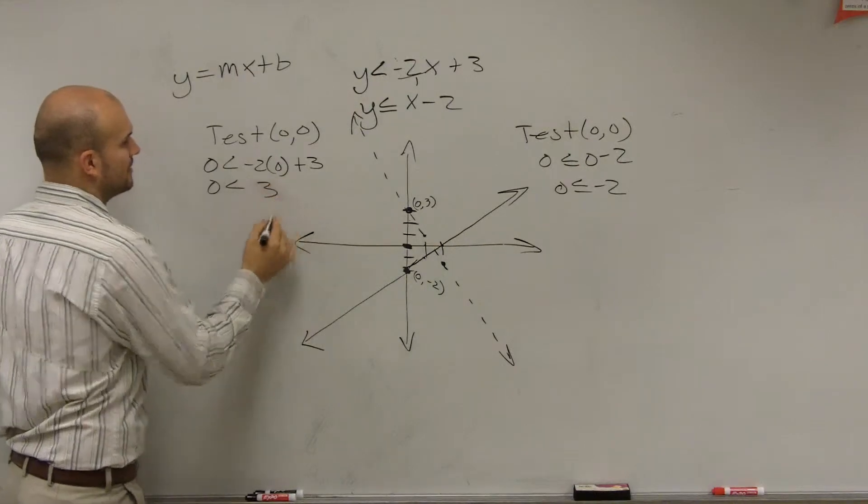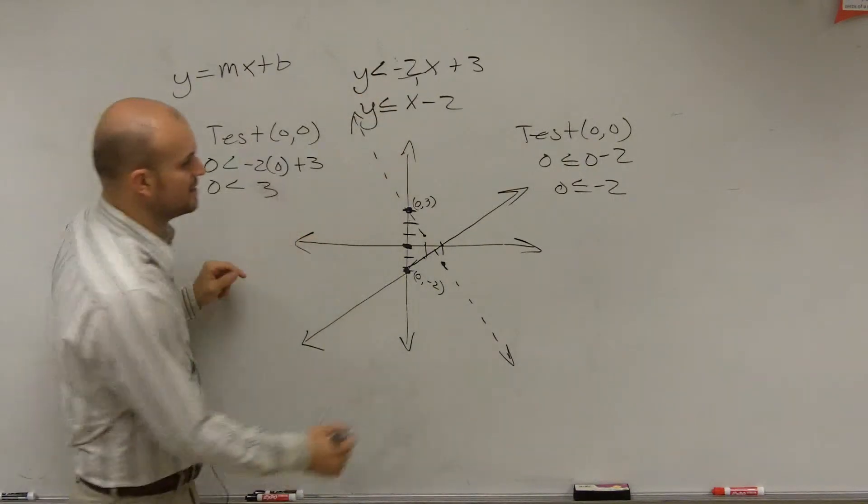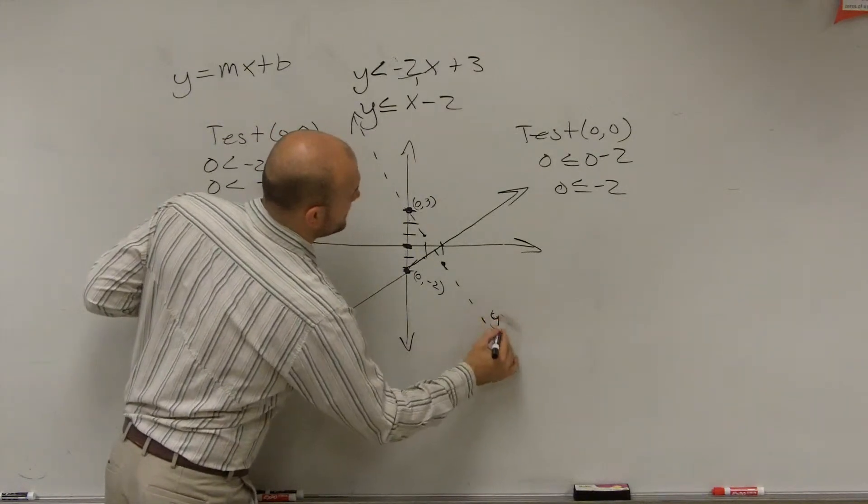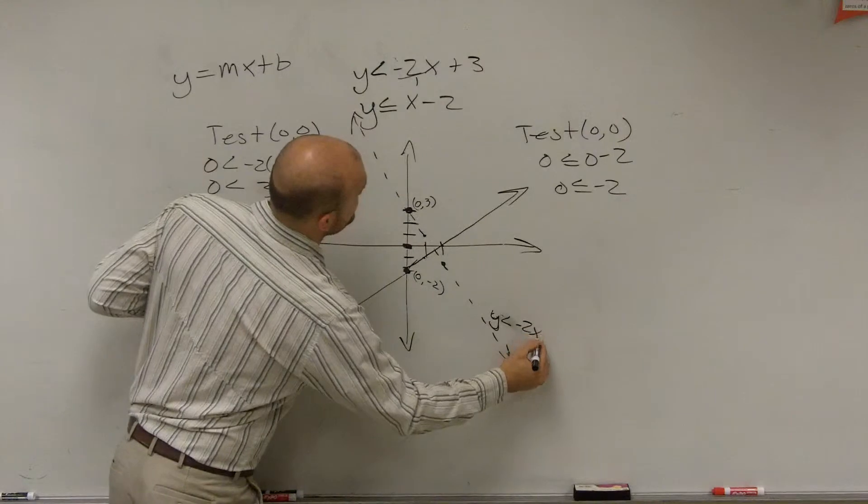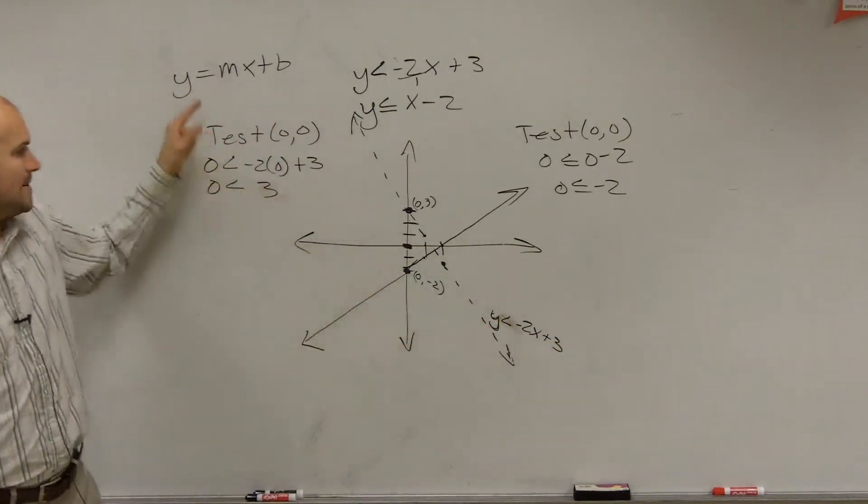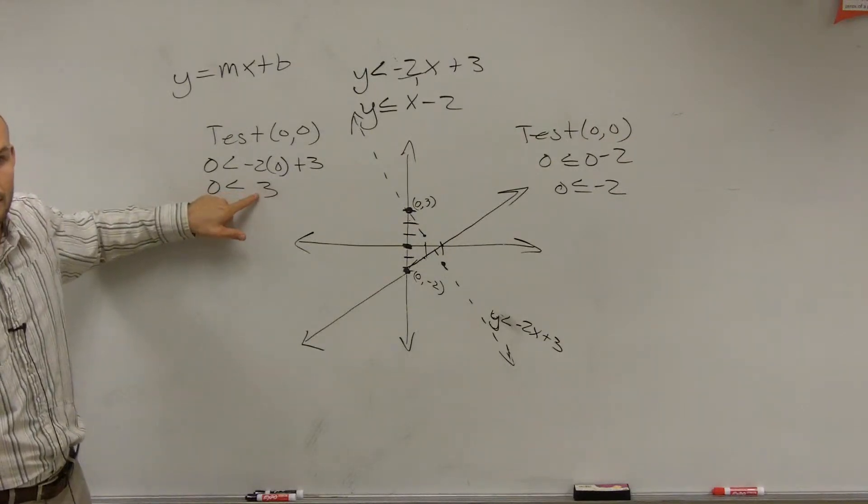So that's a positive 3, right? OK. So my first equation right here, which was my dashed line. So I'm going to write y is less than negative 2x plus 3. Therefore, I remember that's that equation. When I plug in 0, 0, I get 0 is less than 3. Is that true or false? True. True.